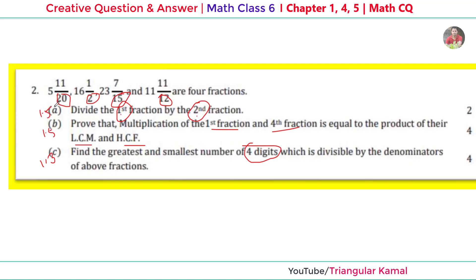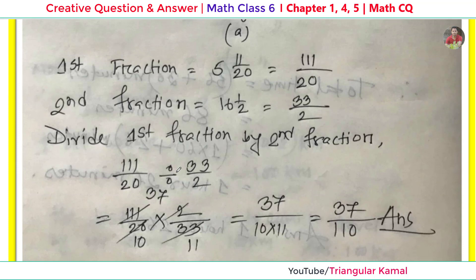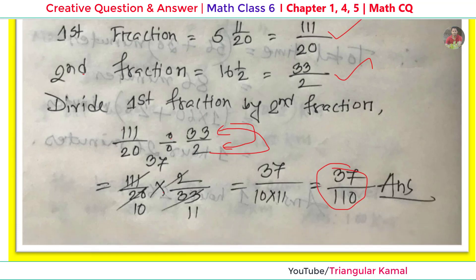For question 2a, we divide the first fraction by the second fraction. Division is converted to multiplication by inverting the divisor — the numerator becomes the denominator and vice versa. Doing the simple calculation, the result is 37/100.